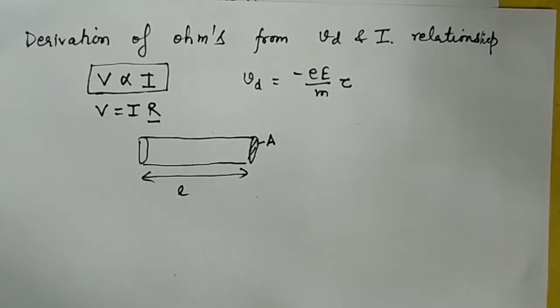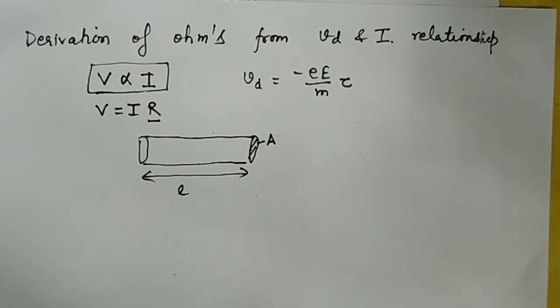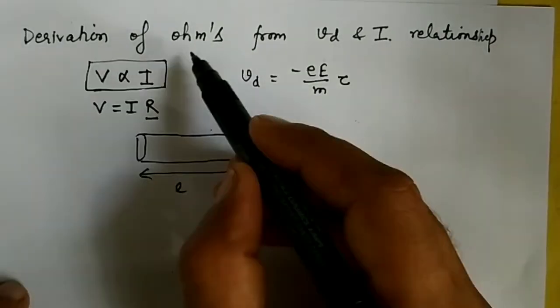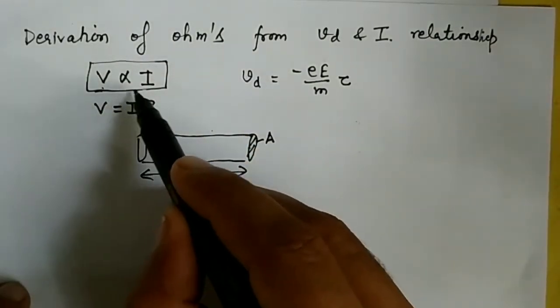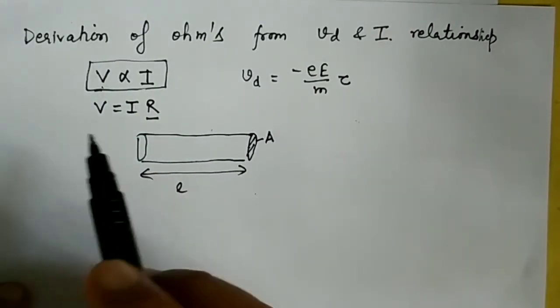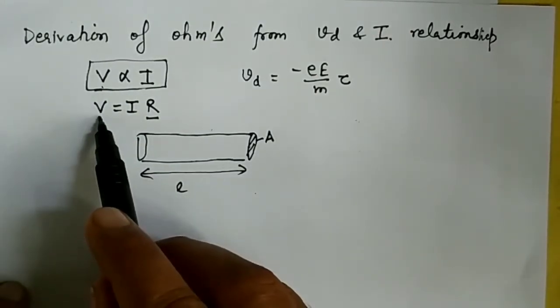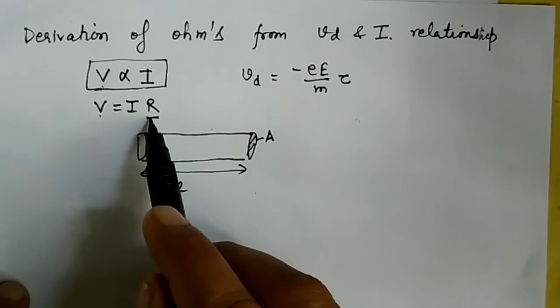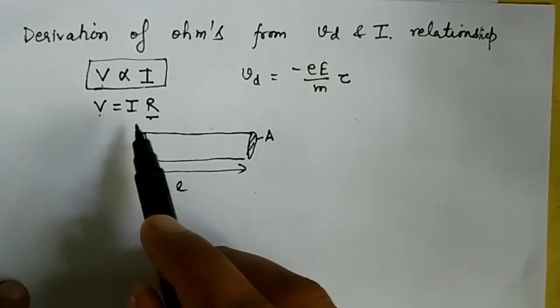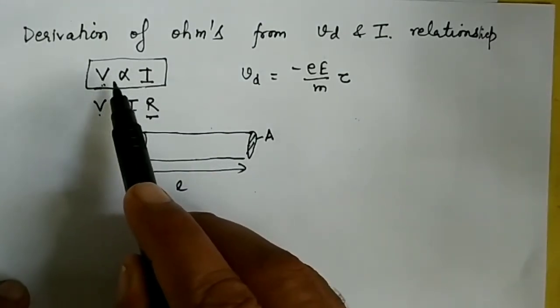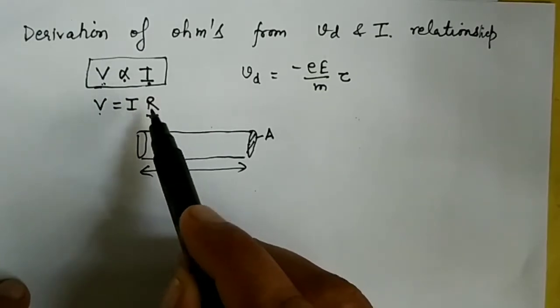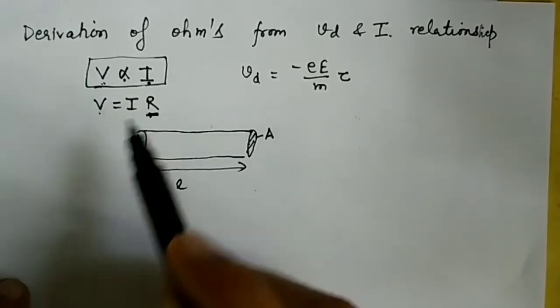Here we are going to derive Ohm's law from the drift velocity and current relationship. We know that Ohm's law is V is directly proportional to I, so V equals I times R, where R is constant.